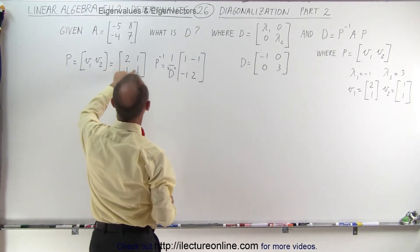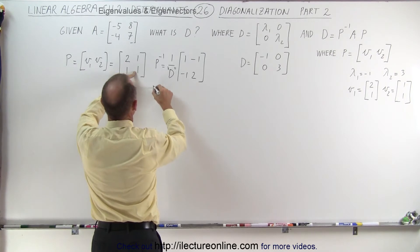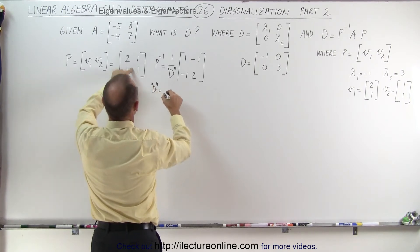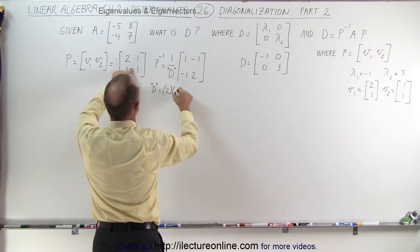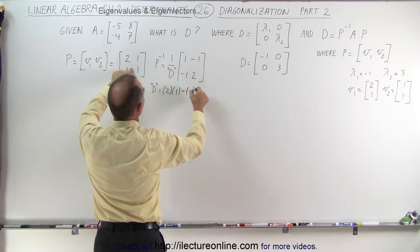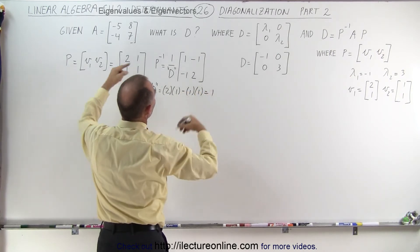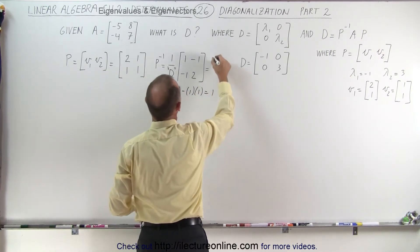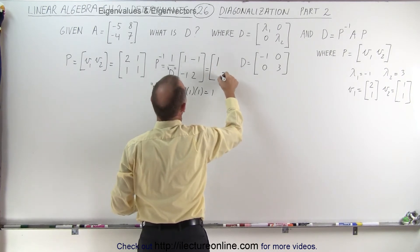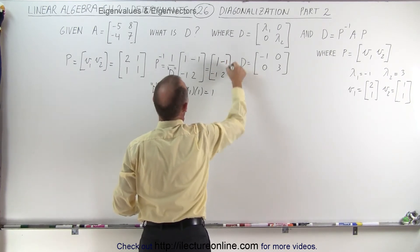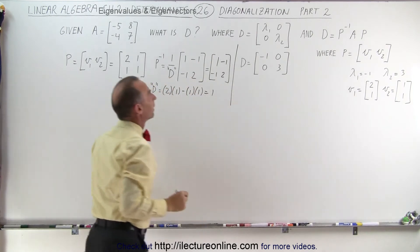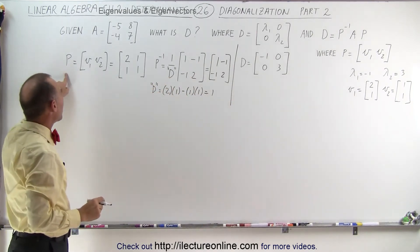We need to find the determinant of this vector. The determinant would be 2 times 1, so where we have D like this is equal to 2 times 1 minus 1 times 1 which is 1, and so therefore this is simply equal to [1, 2, -1, -1]. There we go. We found the P matrix, the inverse of the P matrix.